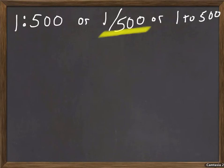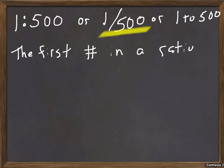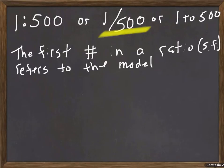If they wanted to know the actual height of the tree, let's kind of go by, you know, talk about the rules of these ratios. The first number in a ratio, parentheses scale factor, represents or refers to maybe the model or drawing.